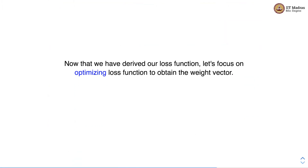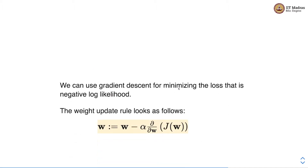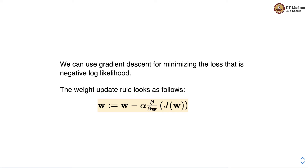Now that we have derived our loss functions, let us focus on optimizing these loss functions to obtain the weight vector w. We want the weight vector w that minimizes the loss, and this is formally stated as w equals arg min J(w). We can use the gradient descent algorithm for minimizing this loss.